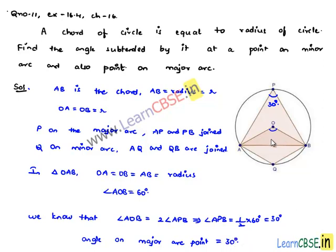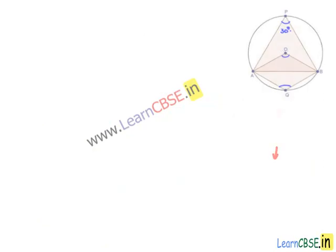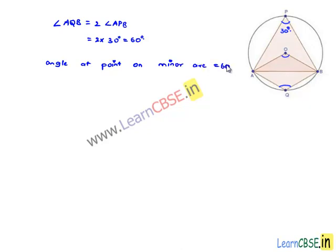And also, we know that the angle subtended by the minor arc will be double the angle subtended by it in the major arc. Therefore, here, angle AQB will be equal to 2 times angle APB, that is equal to 2 times 30 degrees, which is equal to 60 degrees. Therefore, we can say the angle made by the chord at the point on the minor arc is 60 degrees.